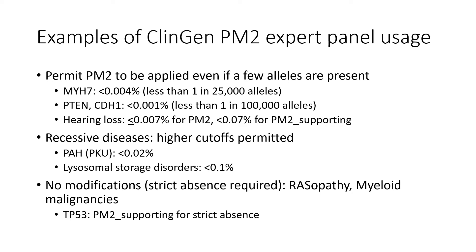Expert groups focusing on recessive disorders have taken a similar approach. A few groups have maintained that strict absence be required for criteria application, with the TP53 expert panel and others dropping population absence to supporting level evidence, given that absence or very low frequency of the variant in population databases may not be a strong enough predictor of pathogenicity to warrant a moderate evidence level.